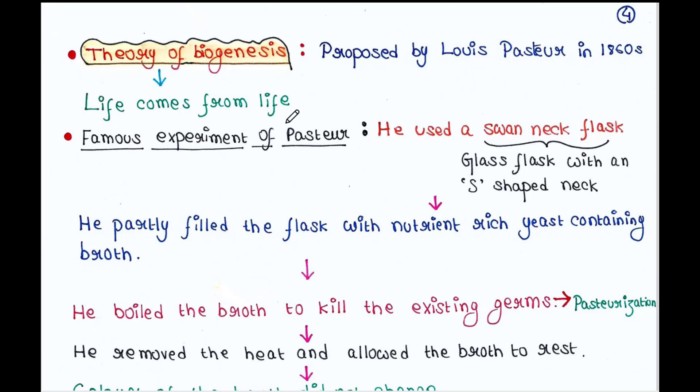So we are talking about theories of evolution of life. In our last lecture, we already talked about its first part and today is the time for second. The link of the first part is in the description box. Today we will talk about the theory of biogenesis.